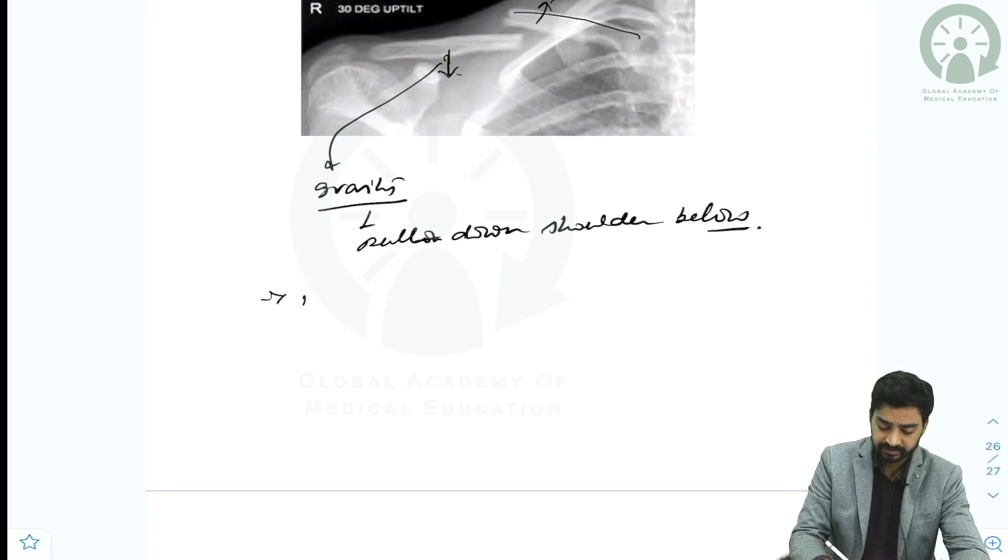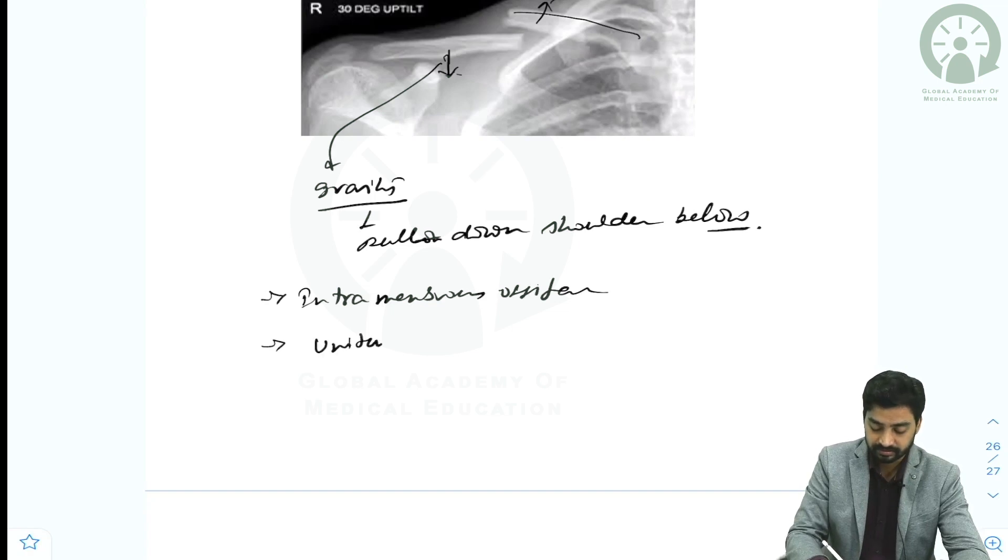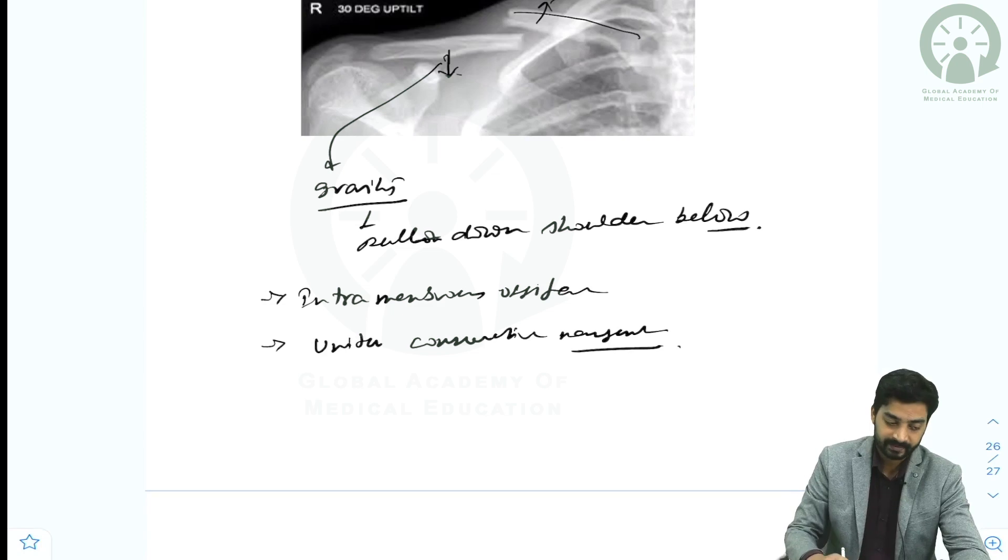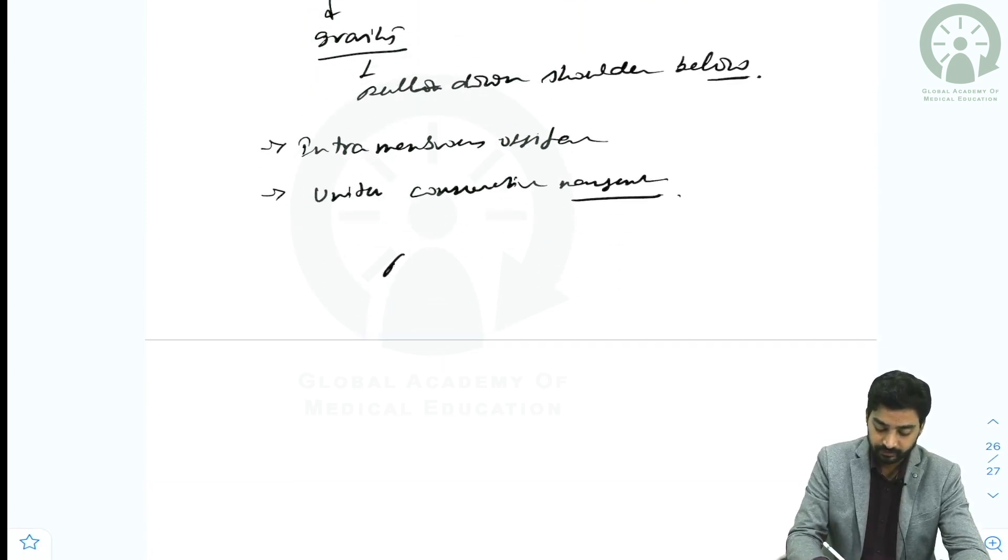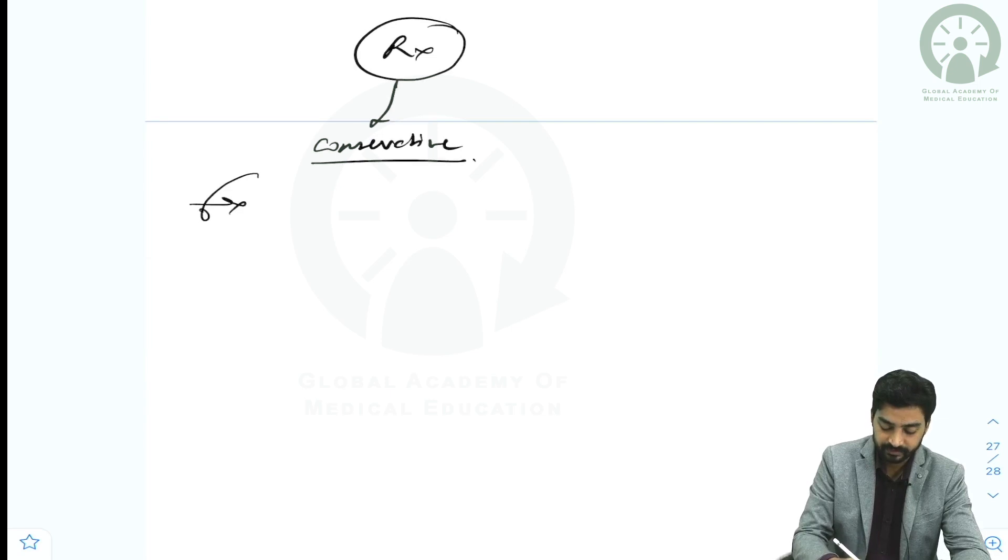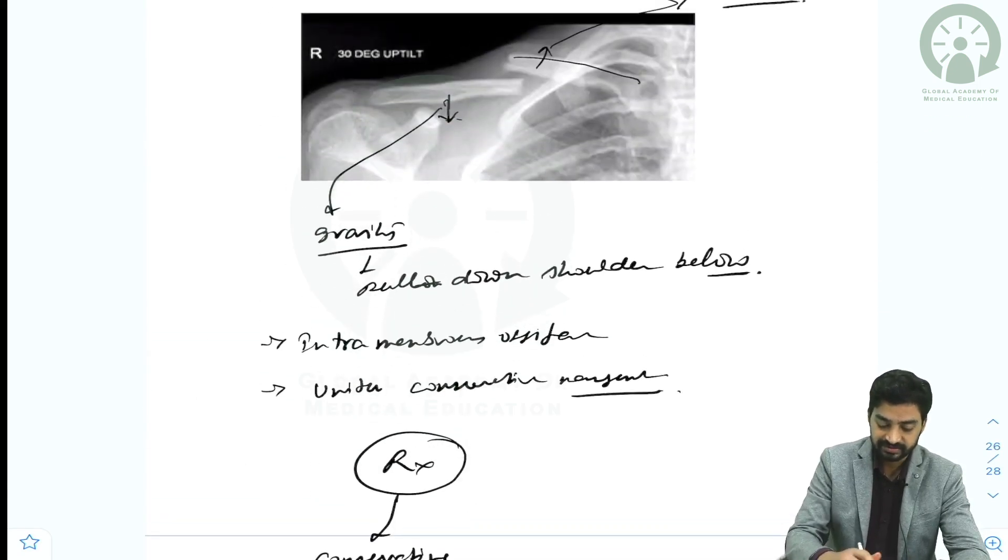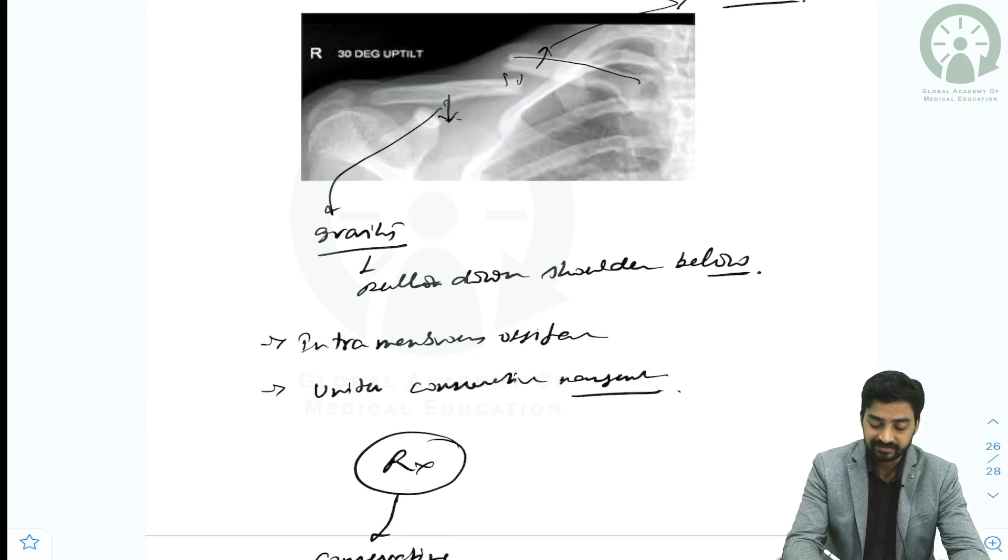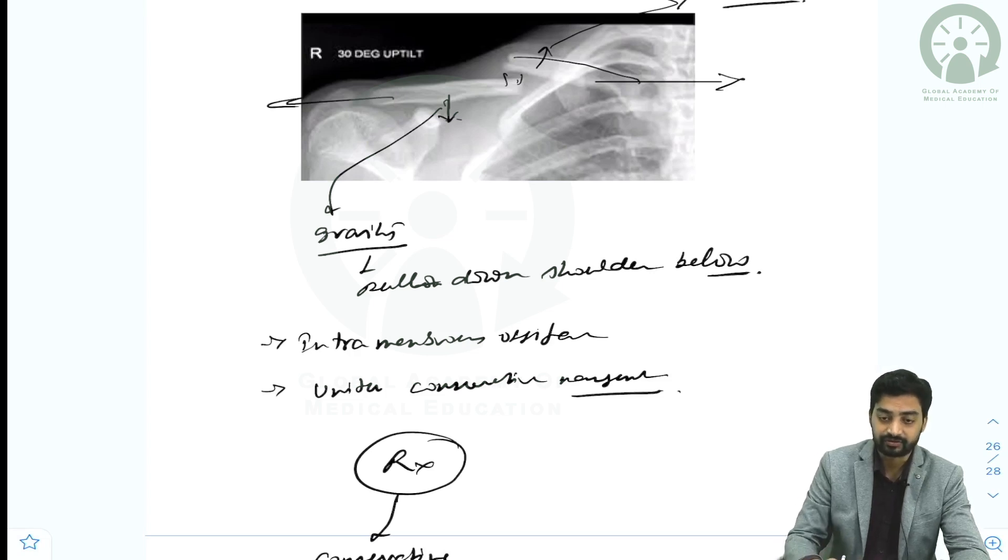A peculiarity of clavicle is it's formed by intramembranous ossification and it unites with conservative management. For the management portion, we usually follow the conservative way. In this fracture, the portions get overlapped. The idea is to give pull to the medial fracture medially and lateral fracture laterally to get the fracture aligned.